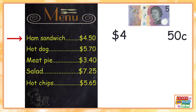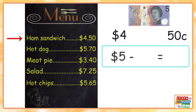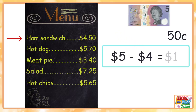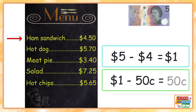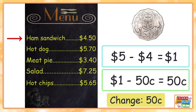Let's first take away the dollar value: five dollars take away four dollars equals one dollar. Now let's work with the cents — one dollar minus fifty cents will leave us with fifty cents. That means we will get fifty cents change.